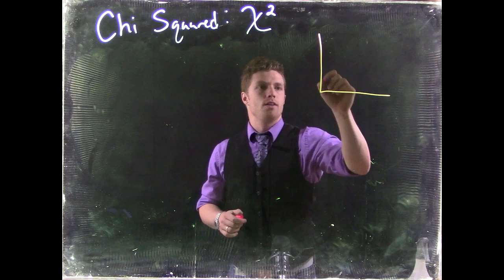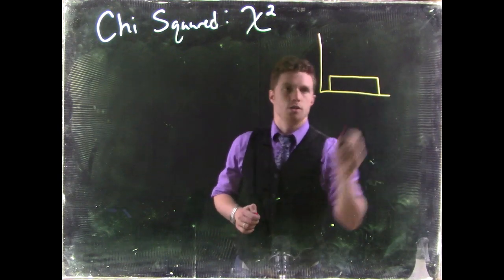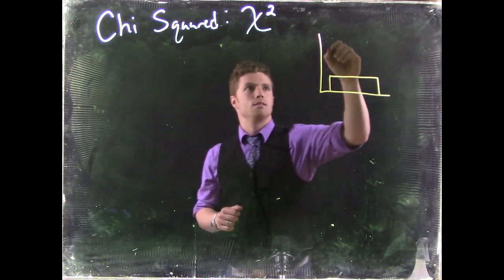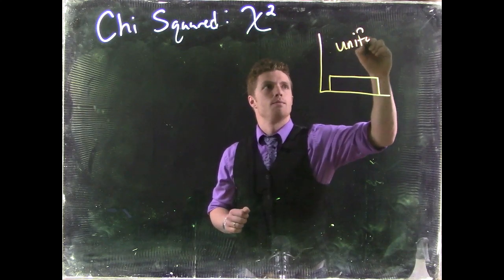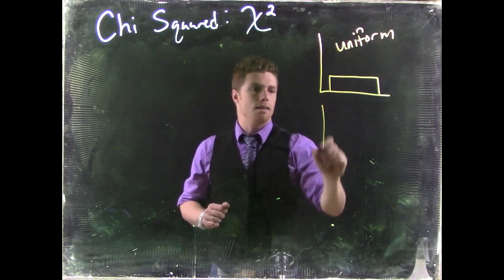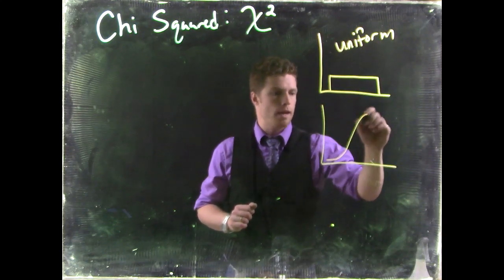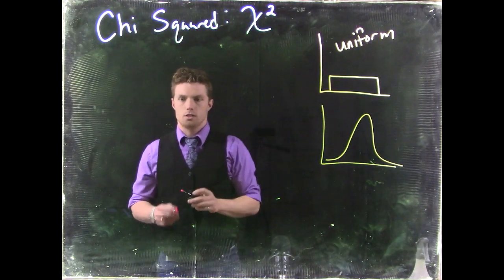We can remember that we've dealt with the uniform distribution, which looks something like this. Let's label it uniform. We've got our bell curve, right? Our normal distribution looks something like that.